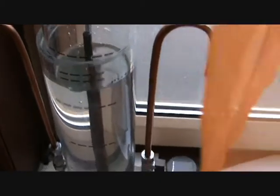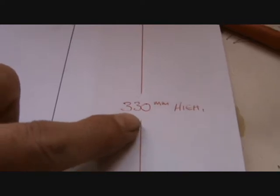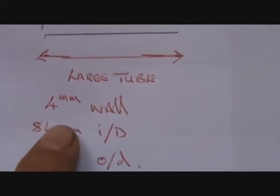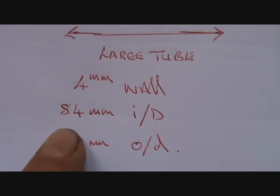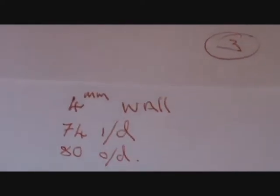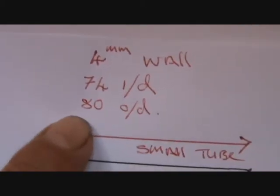First of all, you've got two tubes, an inner and an outer. Both of them, for obvious reasons, are the same length or height, whatever way you want to work it. That's 330mm. Now, the larger outer tube is 4mm wall thickness, 84mm inside diameter, 90mm outside diameter. So if you copy that, you'll not go far wrong.